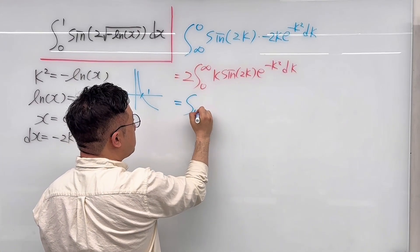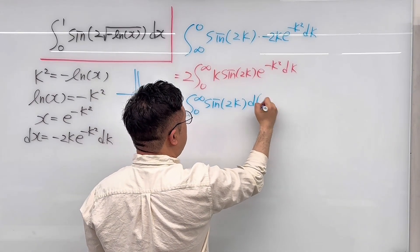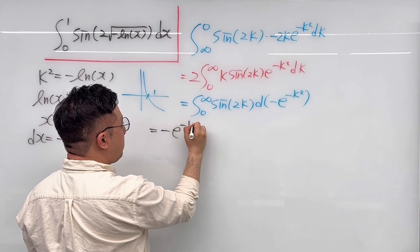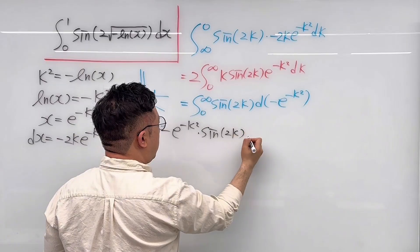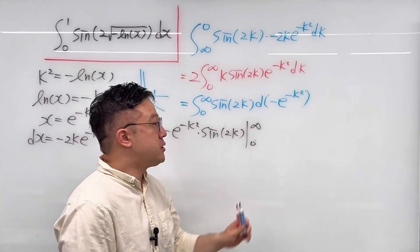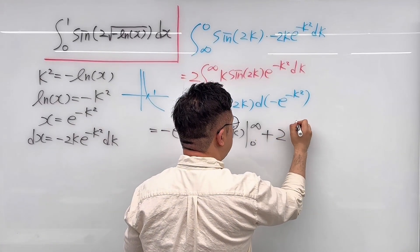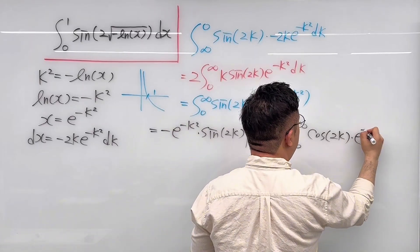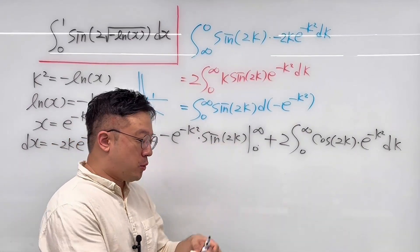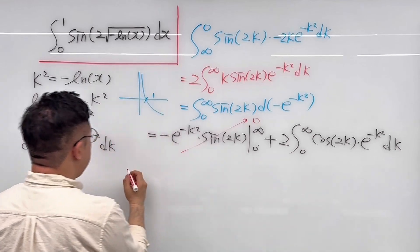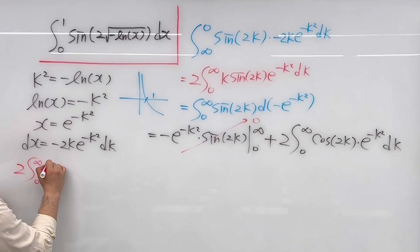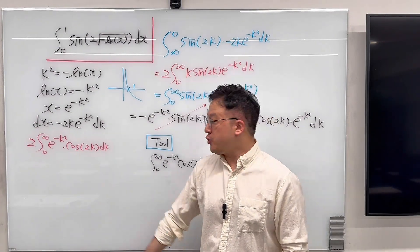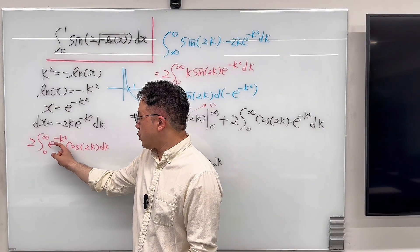This integral equals the integral from 0 to infinity of sin(2k) d(negative e to the power of negative k²). Applying integration by parts gives negative e^(−k²) times sin(2k) evaluated from 0 to infinity, plus 2 times the integral from 0 to infinity of cosine(2k) times e to the power of negative k² dk. The first boundary term goes to 0, so we're left with 2 times the integral from 0 to infinity of e^(−k²) times cosine(2k) dk. This is what we need to work on.